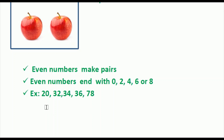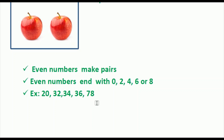Examples: the number 20 ends with 0, so 20 is an even number. Next, 32 ends with the number 2, so 32 is an even number. Next, 34 ends with the number 4, and 4 is an even number so 34 is an even number. Next, 36 ends with the number 6, and 6 is an even number so 36 is an even number. Next, 78 ends with the number 8, so 78 is an even number.